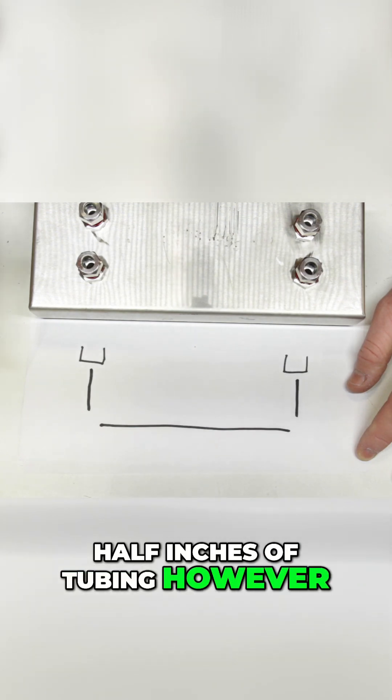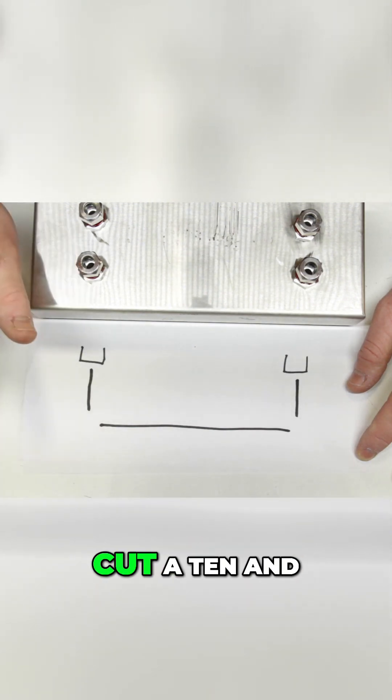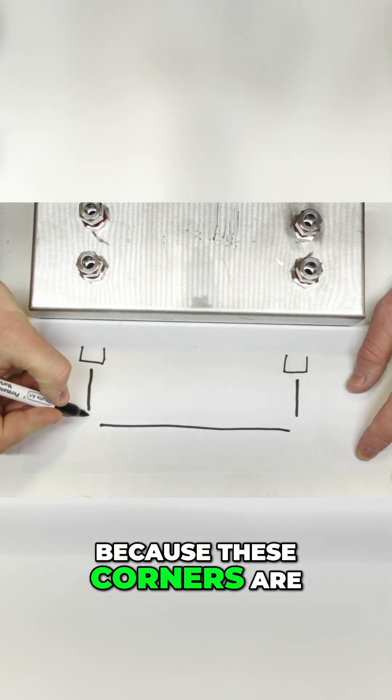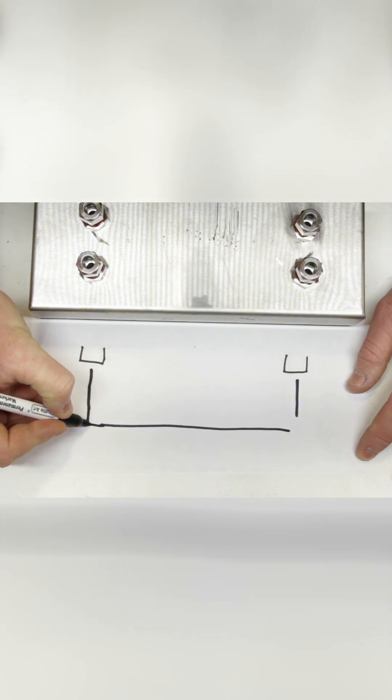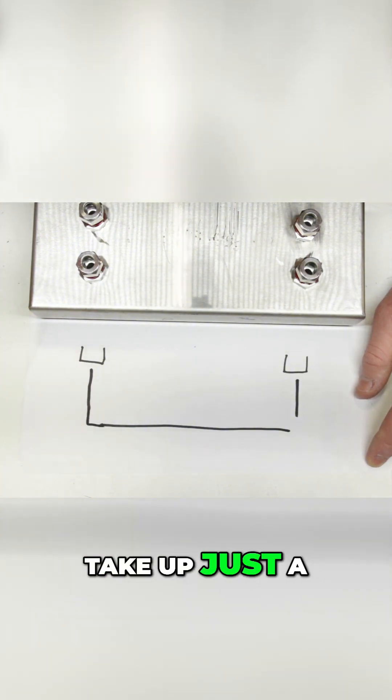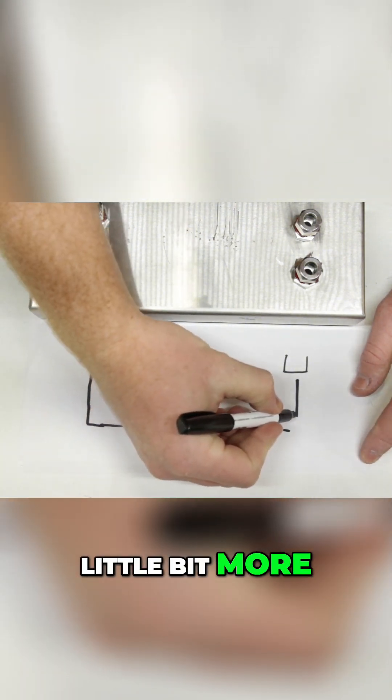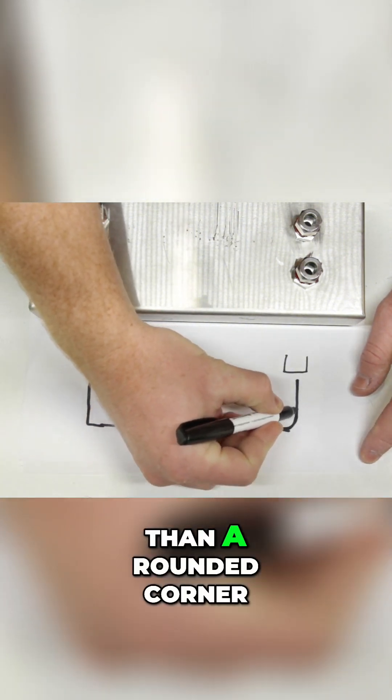However, we don't want to just go ahead and cut a ten and a half inch piece because these corners are not going to end up perfectly square. Square corners actually take up just a little bit more tubing than a rounded corner.